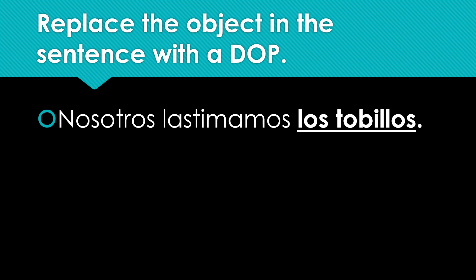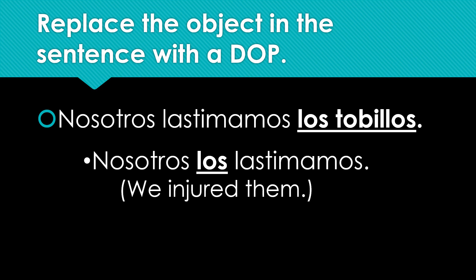Finally, try this one. Replace the object with a DOP. In this sentence, los tobillos is replaced with los, and we move los in front of the verb. Nosotros los lastimamos. I hope that explanation of direct object pronouns made sense. You can use it to complete the activity in this week's packet. Muchas gracias y hasta luego.